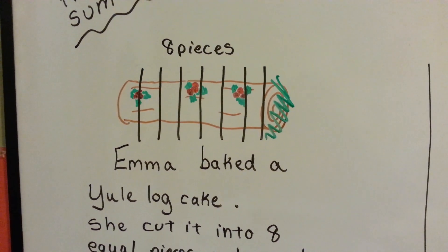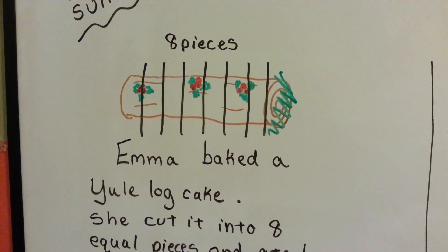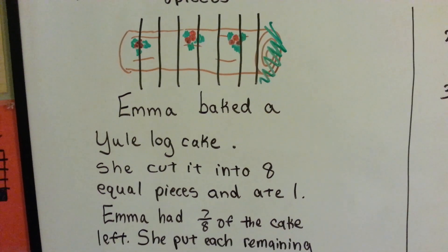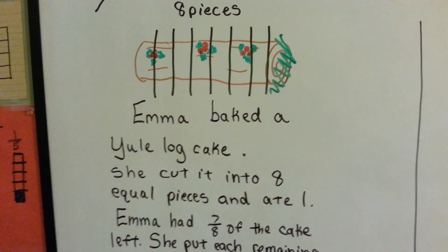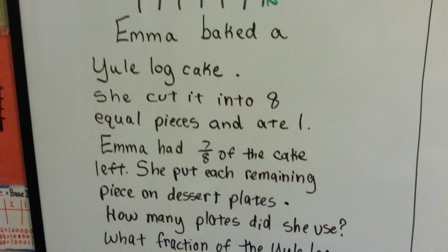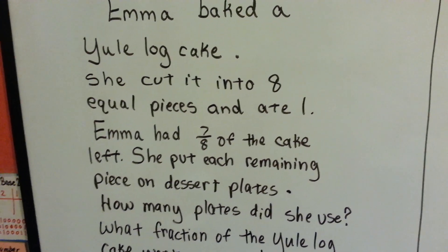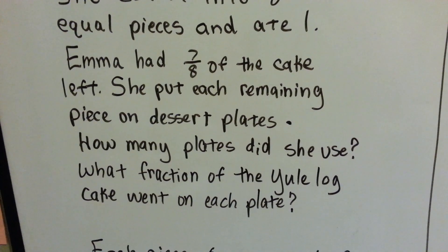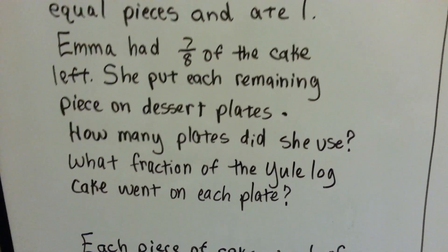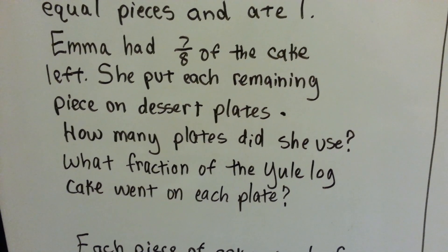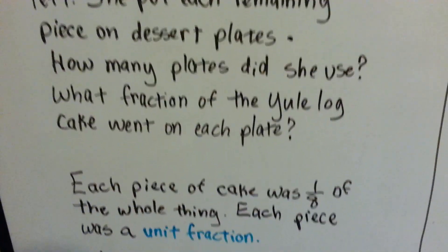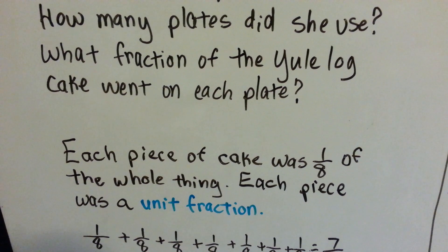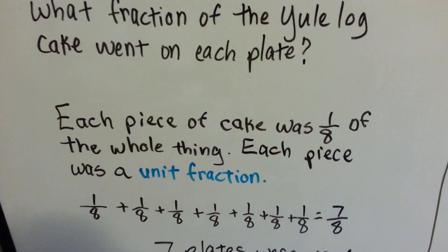We're going to see what Emma's up to. Emma baked a Yule log cake. She cut it into 8 equal pieces and ate 1 — let's say she ate this end piece. She had 7 eighths of the cake left. She put each remaining piece on dessert plates. How many plates did she use? What fraction of the Yule log cake went on each plate? Well, each piece of the cake was 1 eighth of the whole thing — each piece was a unit fraction.